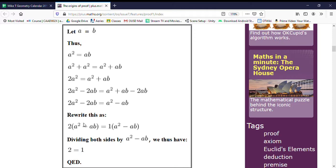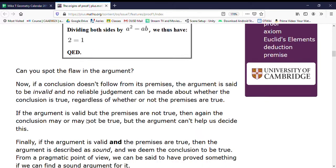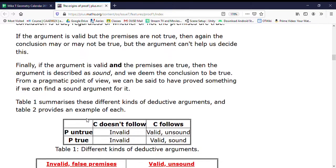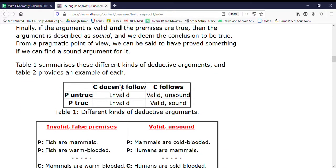If a conclusion doesn't follow from its premises, the argument is said to be invalid, and no reliable judgment can be made about whether the conclusion is true, regardless of whether or not the premises are true. If the argument is valid but the premises are not true, then again the conclusion may or may not be true.